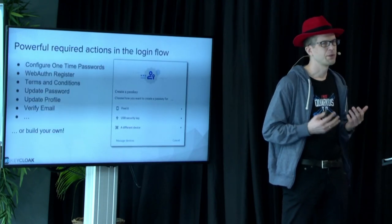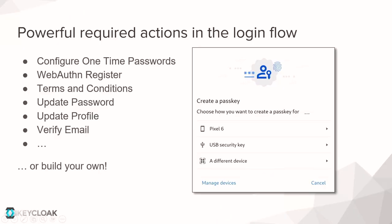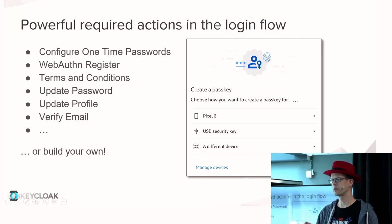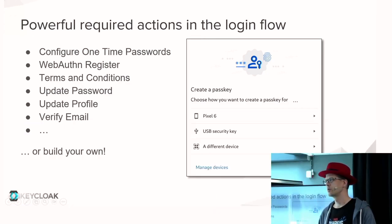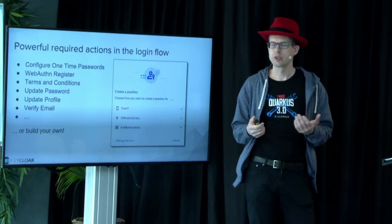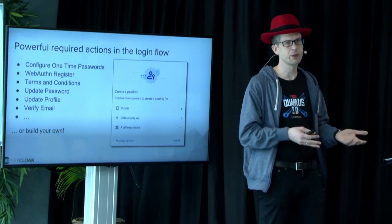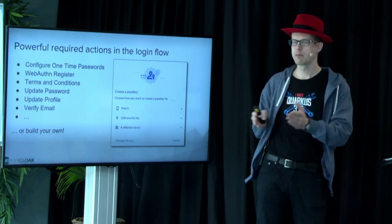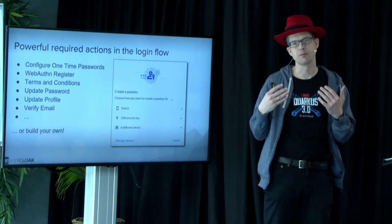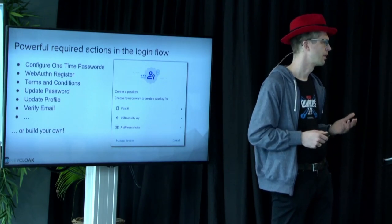A login flow can be really powerful. Between the login — where you put in username and password — and when you end up in your application, you can put in numerous steps. For example, you can force users to configure a one-time password generator. Keycloak will make sure one is defined, and if not, it will ask the user to set one up. The same goes for WebAuthn. You can also add a screen to confirm terms and conditions and record that they've been confirmed. You can require a password update, profile update, or email verification before handing over to the application. All these steps can be placed between the login screen and the application, with some building blocks already defined — and you can also build your own required actions.